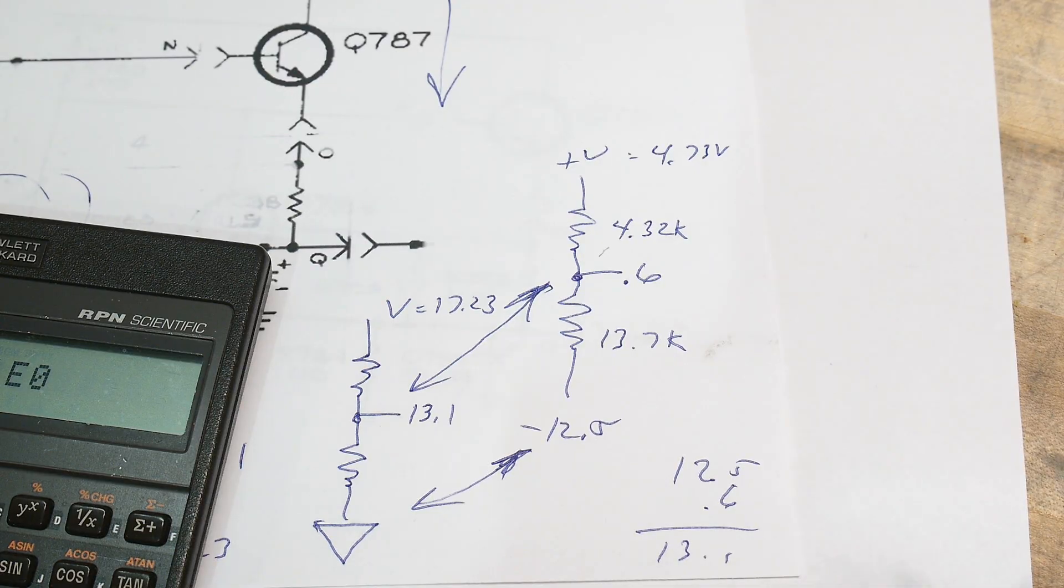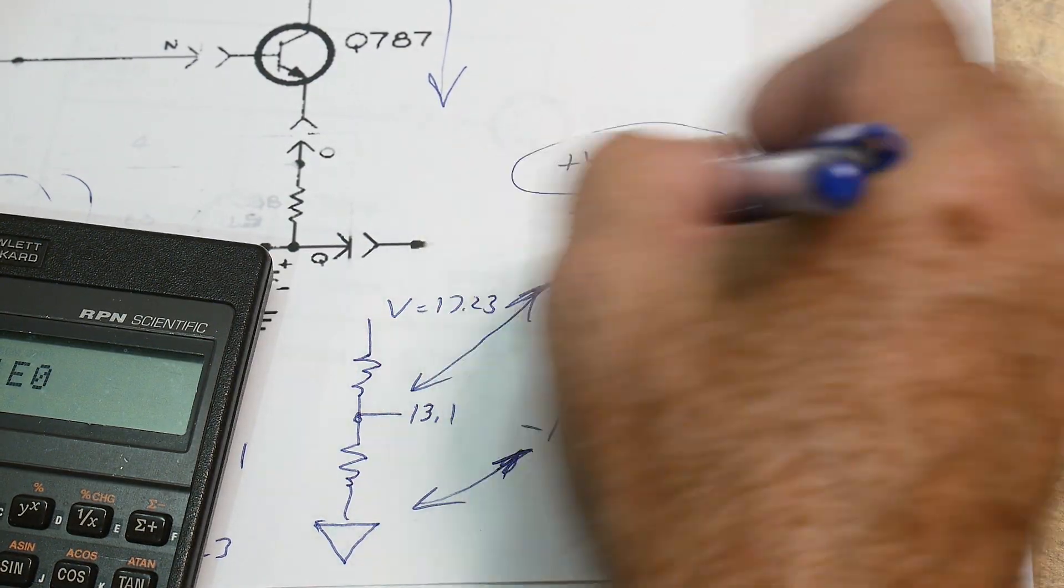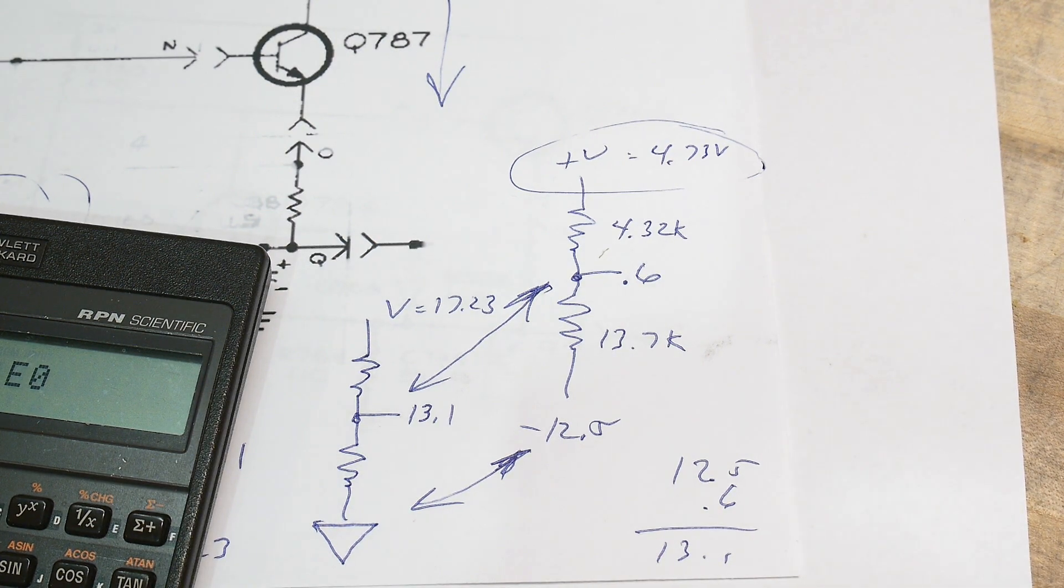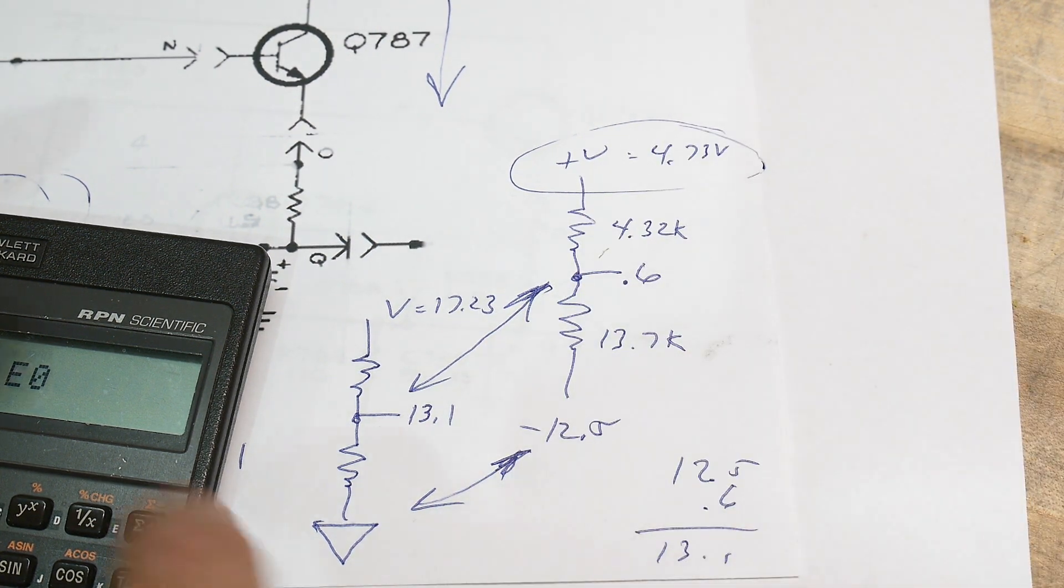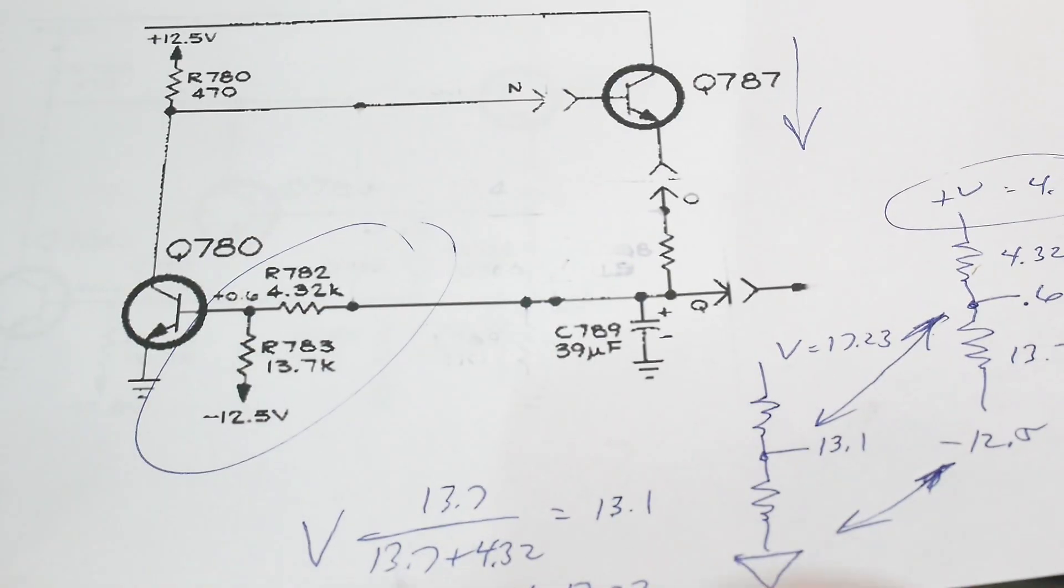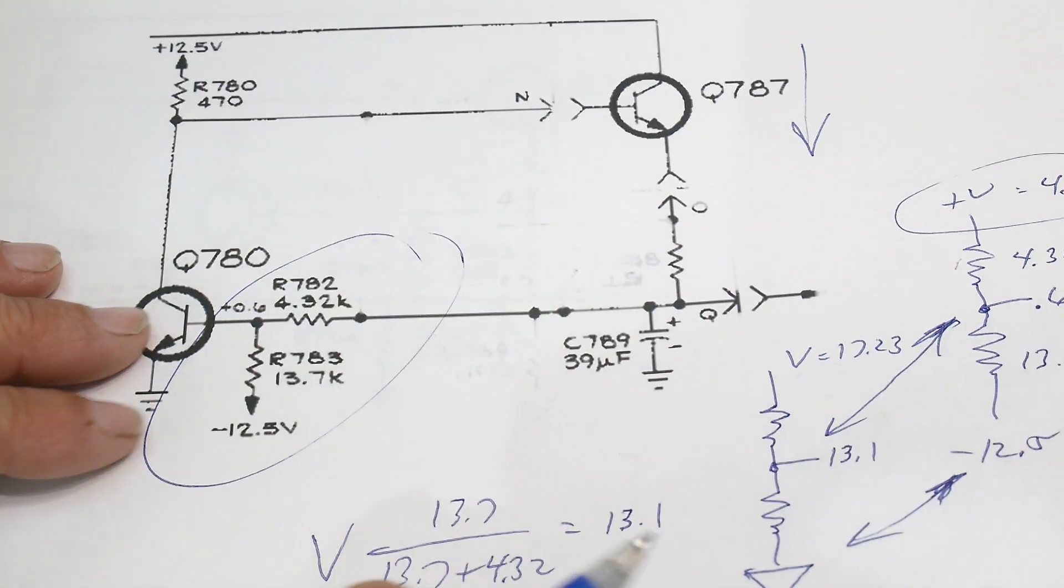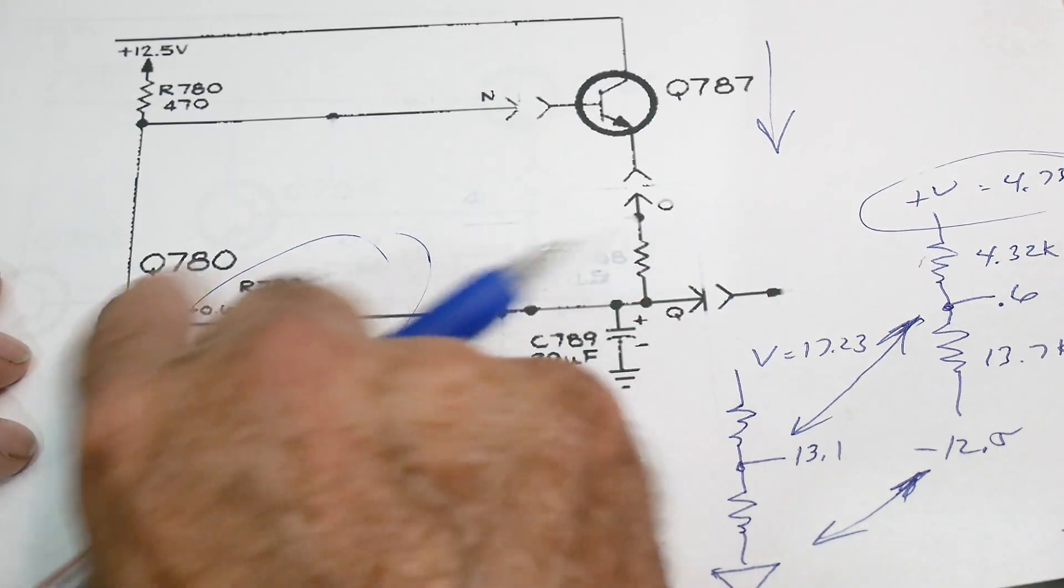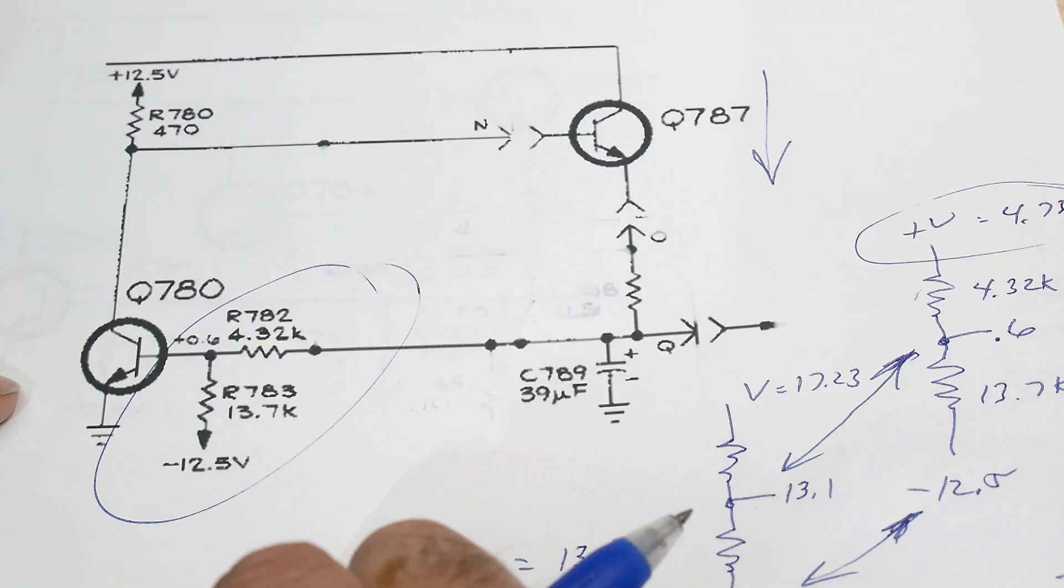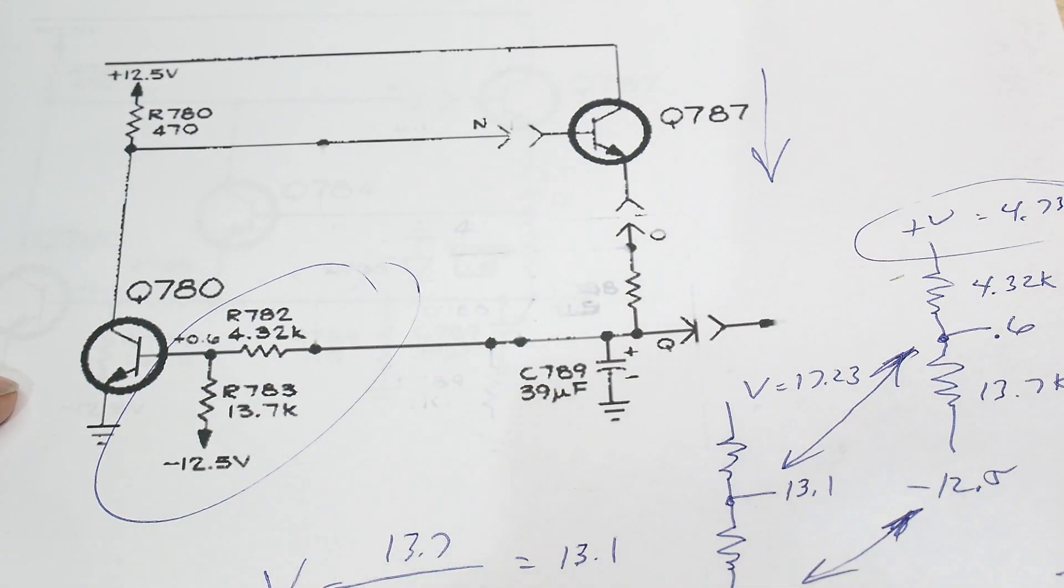That's how this thing works - it's going to regulate it to 4.73 volts. Now they wanted five volts, so maybe different values would have been better, but these are the values they had. Maybe 0.6 volts isn't exactly correct - it will be temperature dependent. But it will regulate it to about five volts.